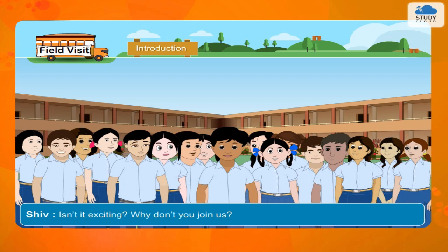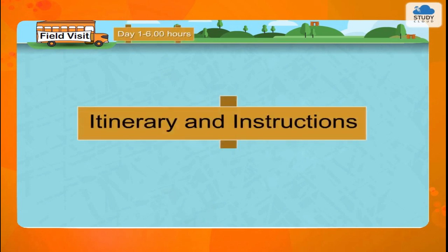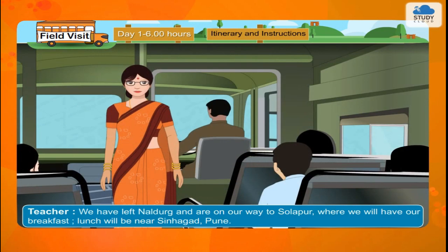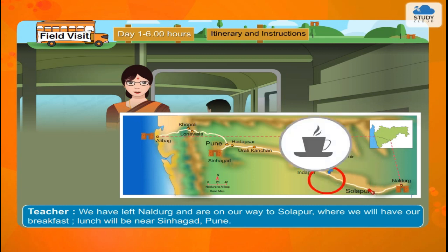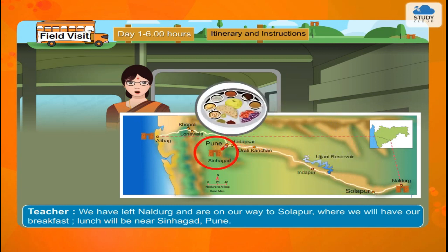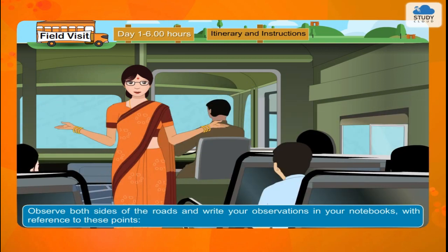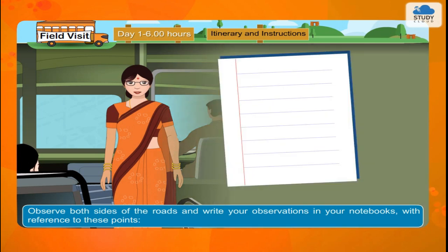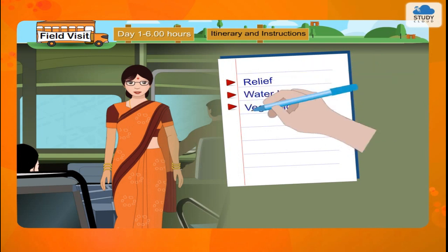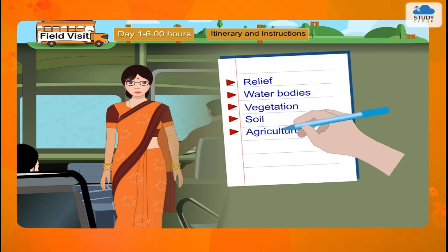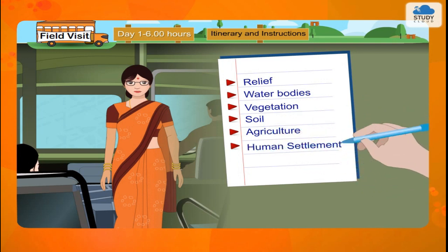Shiv: Isn't it exciting? Why don't you join us? Day 1. Itinerary and Instructions. Teacher: We have left Naldurk and are on our way to Solapur where we will have our breakfast. Lunch will be near Sinagad, Pune. Observe both sides of the roads and write your observations in your notebooks with reference to these points: Relief, Water bodies, Vegetation, Soil, Agriculture, Human Settlement, Settlement Patterns.